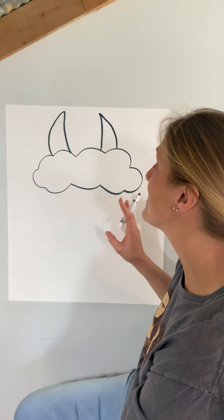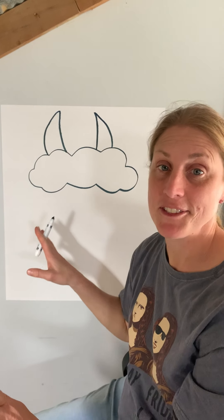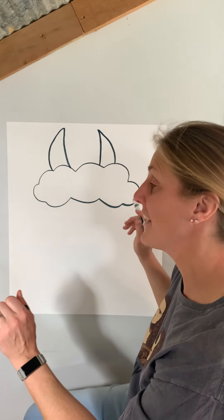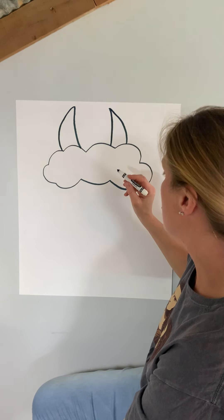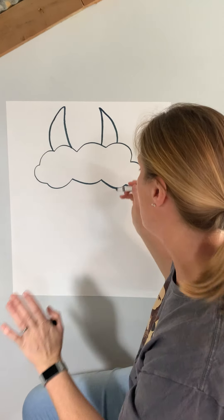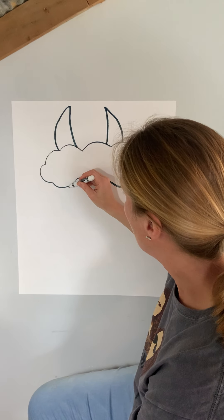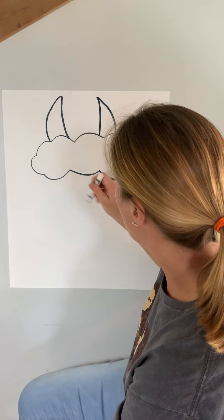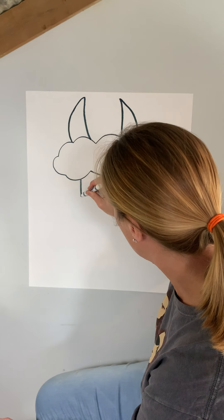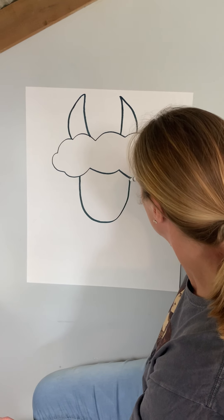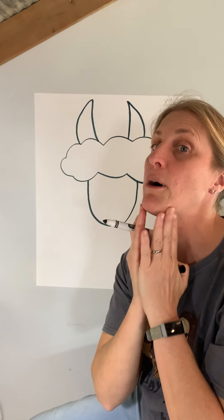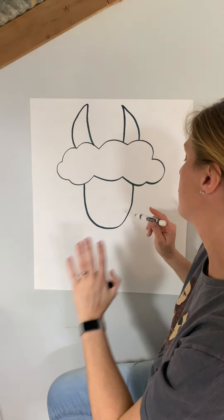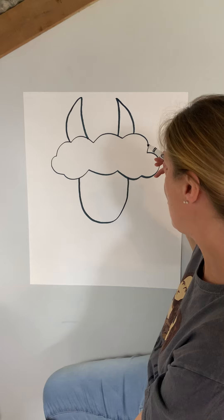Ava says that these are more like llama ears than alpaca ears, but I am not an expert on the differences between the animals like Ava is. So next I'm gonna do the face part of the animal — I'm gonna come from the bottom of the cloud and draw a U-shape, and that's going to be the bottom part of the animal's face.